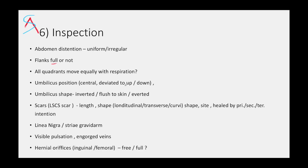If the flanks are full, it means gestation is near term. Look for whether all quadrants move equally with respiration. Look for the umbilicus position — central, deviated up, down, right, or left — and its shape; normally it is inverted but could be flush to skin. Inverted umbilicus is seen in ascites. Look for any scars, especially a previous caesarean scar — note the length, shape, site, and whether healed by primary, secondary, or tertiary intention. Also note the linea nigra on the midline, striae gravidarum (pink and white lines), visible pulsations, engorged veins, and hernia orifices — inguinal or femoral — whether free or full.